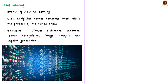Now, coming to deep learning. Deep learning is a branch of machine learning and it uses artificial neural networks that mimic the process of the human brain. Some examples of deep learning include virtual assistants, chatbots, speech recognition, image analysis, and caption generation.